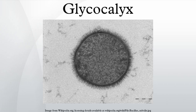The glycocalyx also consists of a wide range of enzymes and proteins that regulate leukocyte and thrombocyte adherence, since its principal role in the vasculature is to maintain plasma and vessel wall homeostasis. These enzymes and proteins include endothelial nitric oxide synthase, extracellular superoxide dismutase, angiotensin-converting enzyme, antithrombin III, lipoprotein lipase, apolipoproteins, growth factors, and chemokines. These enzymes and proteins serve to reinforce the glycocalyx barrier against vascular and other diseases.